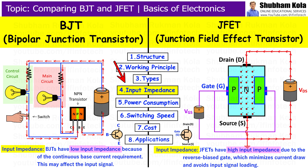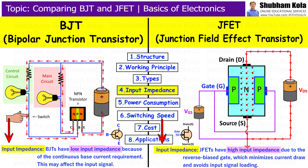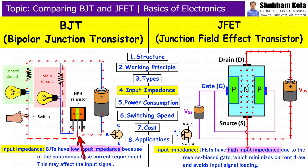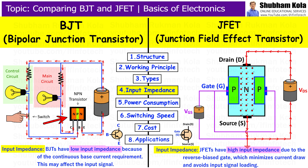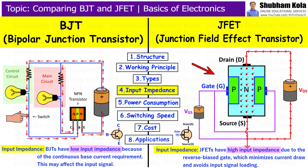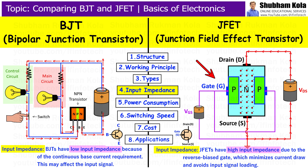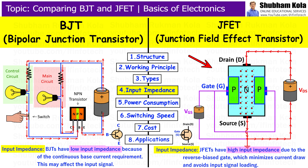Next is Input Impedance. The input impedance of BJT and JFET differ significantly. BJT has low input impedance because it requires a continuous base current to operate, which can affect the input signal, making BJT less suitable for high impedance applications. On the other hand, JFET has very high input impedance. Since the gate is reverse biased and ideally does not draw current, it does not load the input signal, making it highly suitable for sensitive and high impedance circuits.